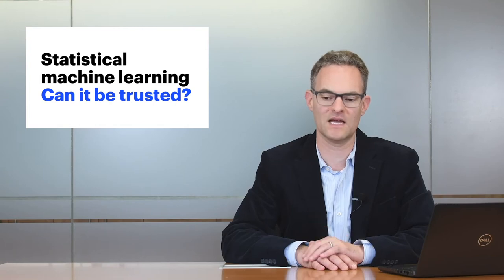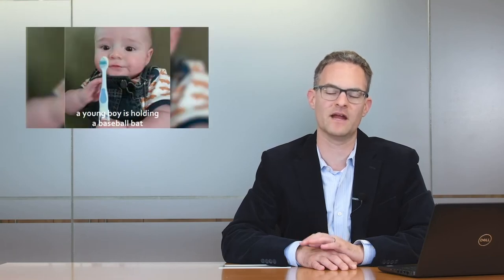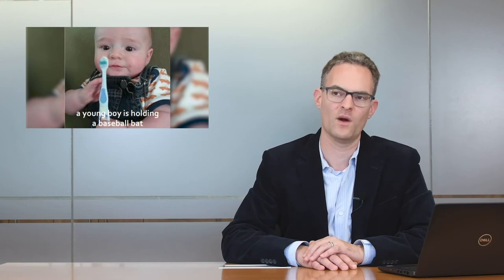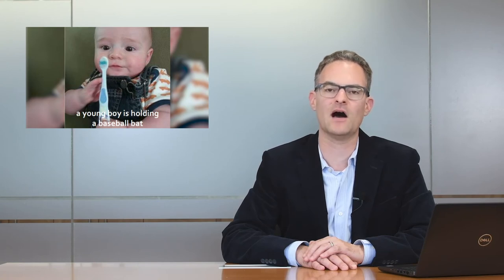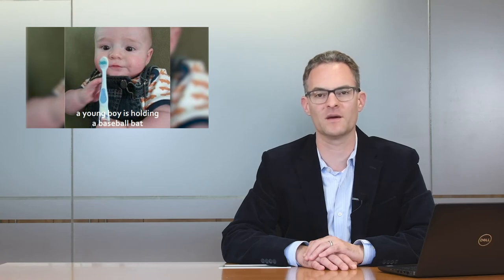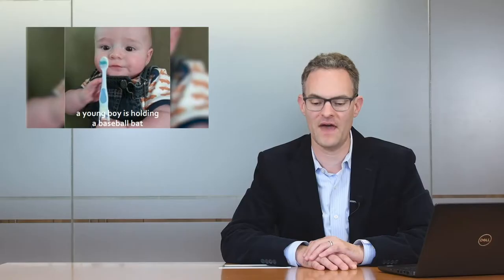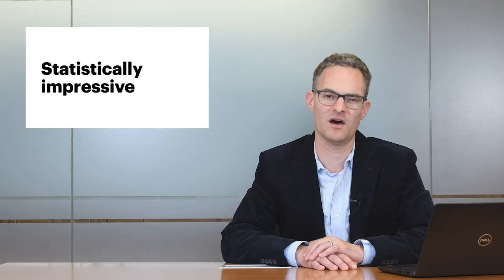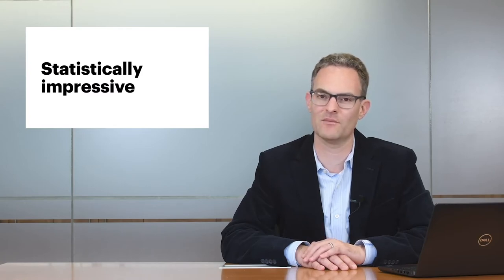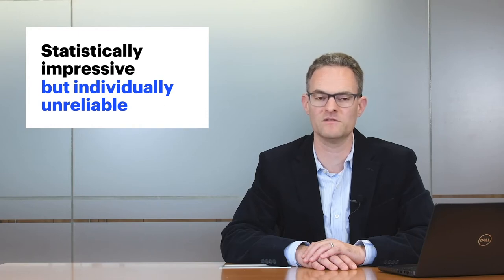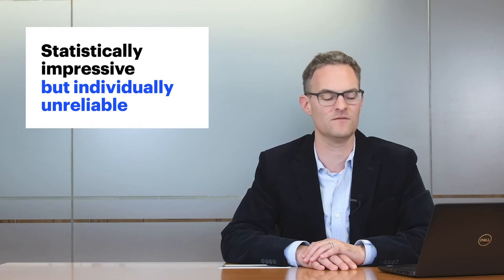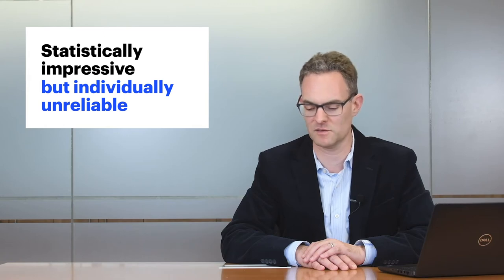And in one example that's shown here, this is an example of an algorithm developed for DARPA, where they looked at building algorithms that could do scene understanding and description. And here it says, a baby is holding a baseball bat. Now, when you look at this, it's kind of close, but it's not really correct. And that is one of the main challenges we see now, where the phrase that DARPA likes to use is, statistically impressive, but individually unreliable. You can always find a couple examples that give you unease about how the algorithm is performing.